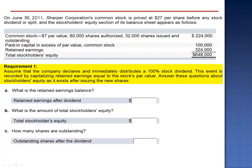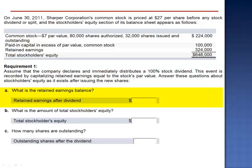Requirement 1. Assume that the company declares and immediately distributes a 100% stock dividend. This event is recorded by capitalizing retained earnings equal to the stock's par value. Letter A asks what the retained earnings balance would be after the dividend.